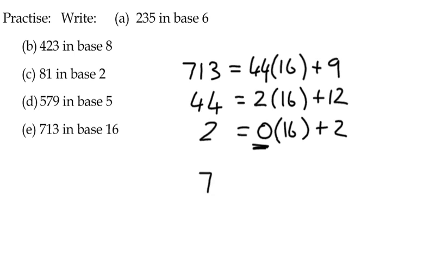And this is where the interesting thing happens. 713 to the base 10 is equal to, it should be 2, 12, 9. Except that we can't put 12 as a single digit. So we've got to remember that when we get to 9, 10 is A, 11 is B, 12 is C.